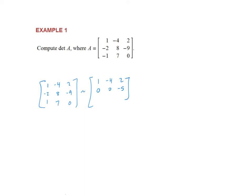I noticed I lost a sign on row 3 — that 1 should have a negative sign in front of it. So I need to add rows 1 and 3, giving 0, 3, 2. The determinant of this resulting matrix is the same as the determinant of the original matrix. I'm going to do one more step: if I have a triangular matrix with all zeros below the diagonal, I can just multiply along the diagonal. So we can use row operations and these properties of determinants to our advantage.